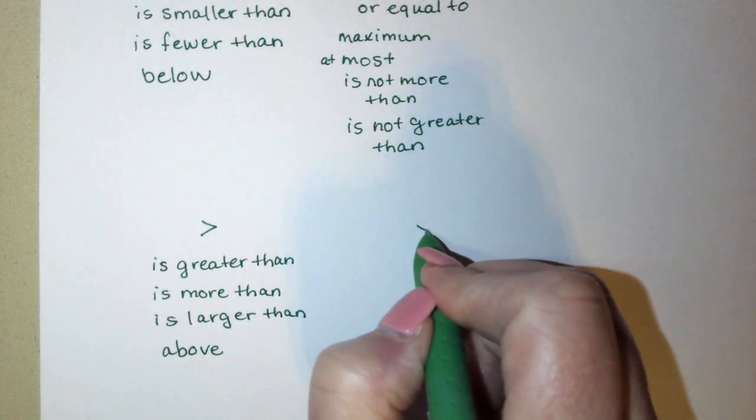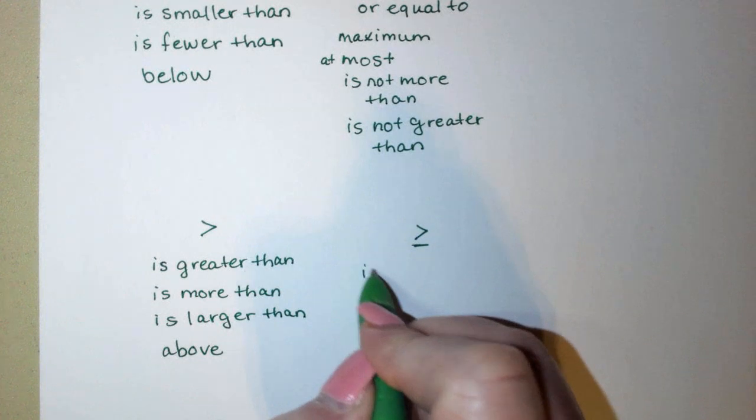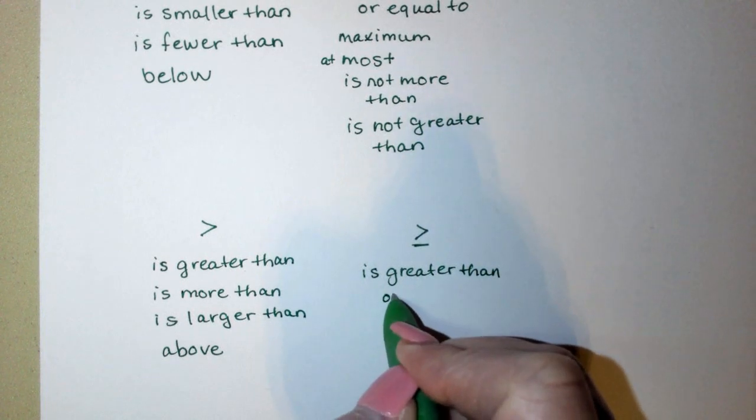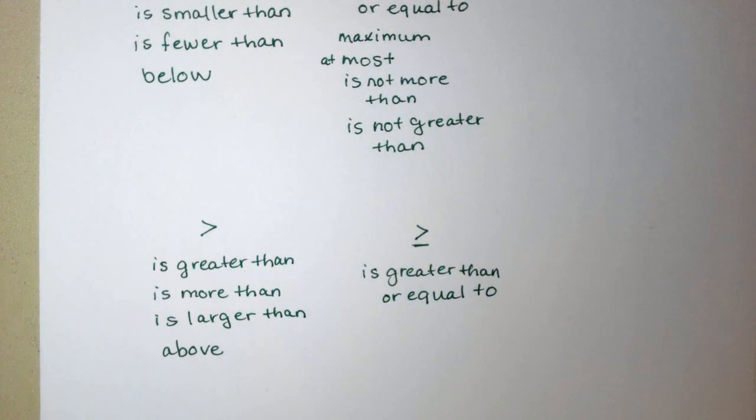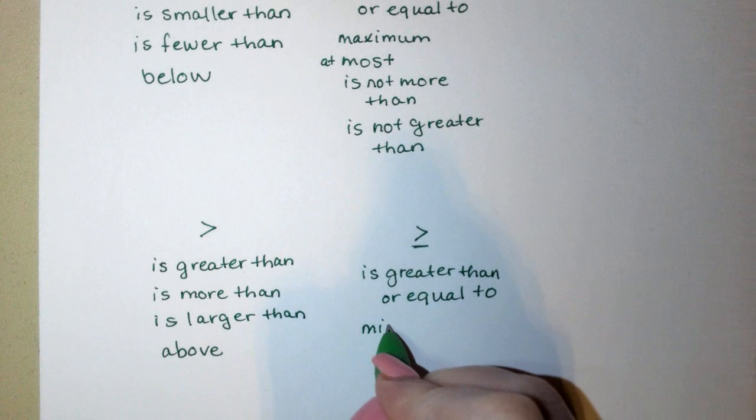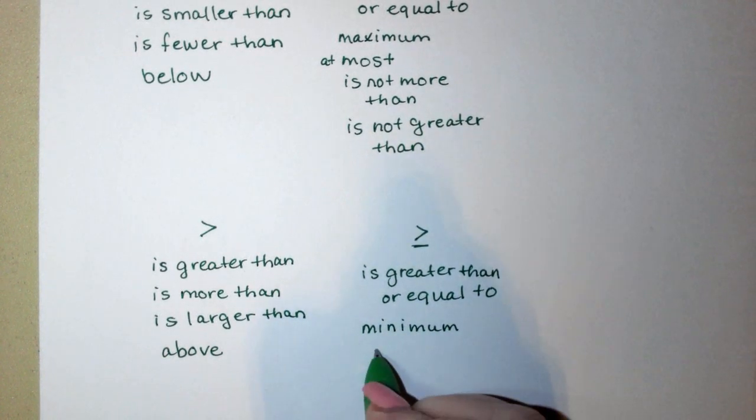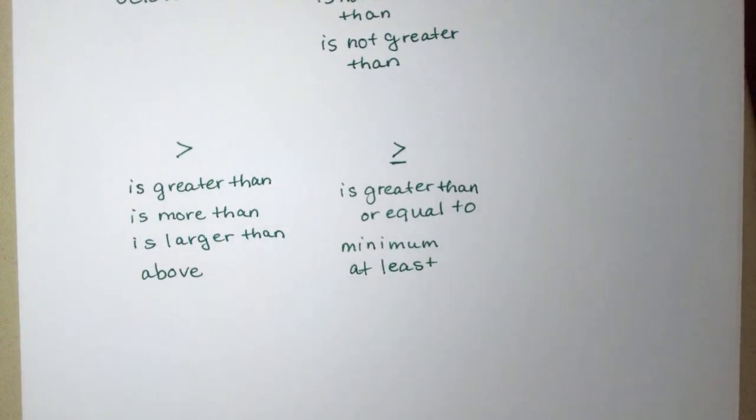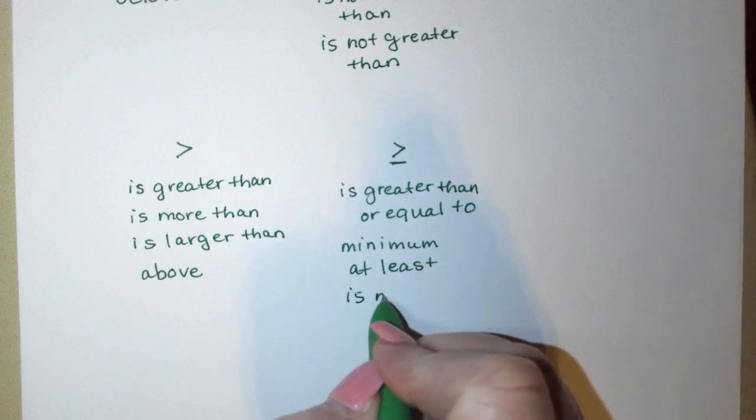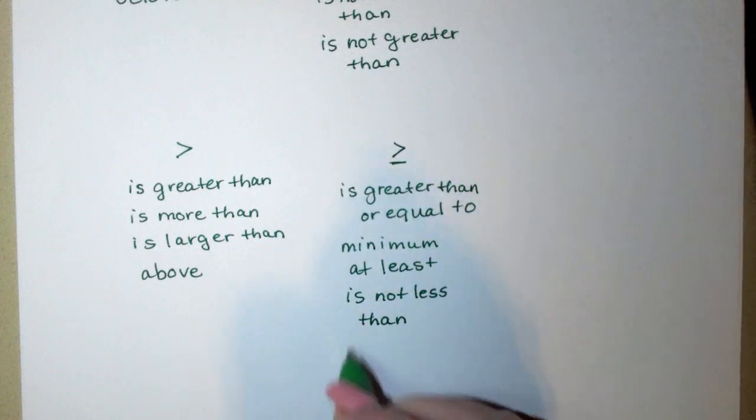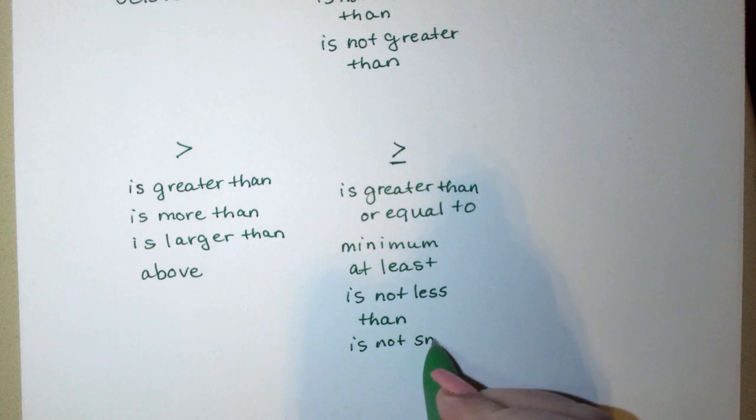And then, of course, we have the same symbol with the line underneath it, which means is greater than or equal to. And once again, this would be at minimum. Minimum amount that you must have, or at least. If I say you must have at least a 70 to pass my class, that means your grade has to be greater than or equal to a 70. Is not less than. Your grade cannot be less than a 70, or is not smaller than.